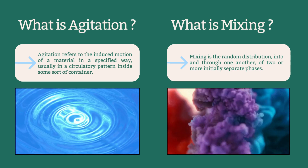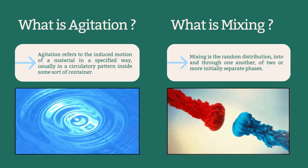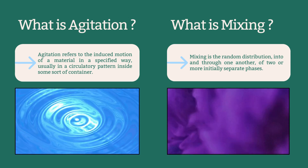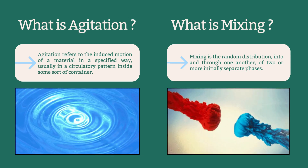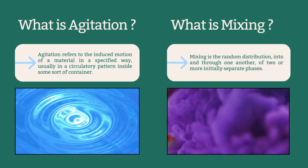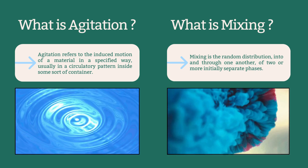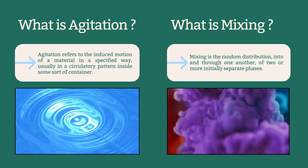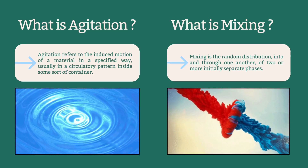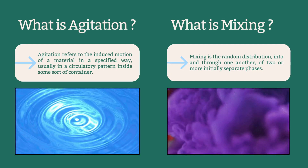Firstly, let us clarify what is agitation. Think about when you are cooking and you stir a pot of soup to prevent the ingredients from settling at the bottom — that's agitation in action, which ensures even heating and blending of the flavors. Agitation refers to the induced motion of a material in a specific way, typically in a circular pattern inside a container. It's all about creating movement within the substance.